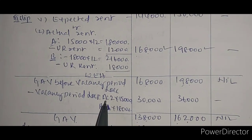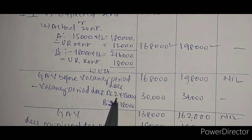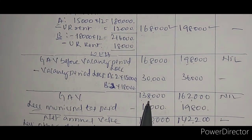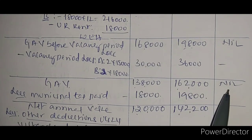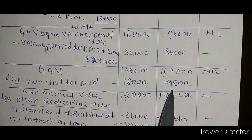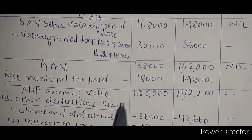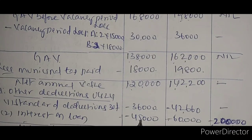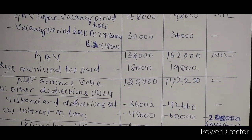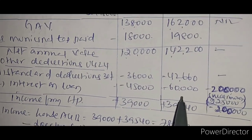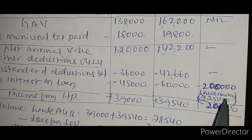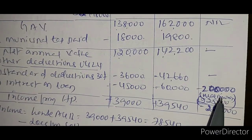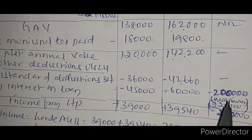Deduct vacancy period loss: House A has 2 months vacancy at thirty thousand, House B has 2 months at thirty six thousand. Results: House A one lakh thirty eight thousand, House B one lakh sixty two thousand. Deduct municipal tax paid by owner: House A eighteen thousand, House B nineteen thousand eight hundred. Net annual value: House A one lakh twenty thousand, House B one lakh forty two thousand two hundred.